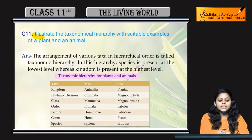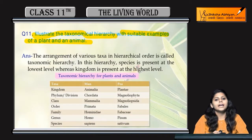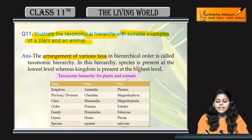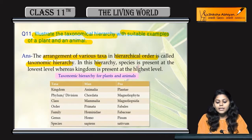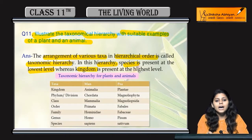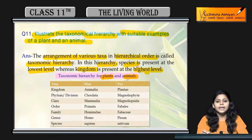The next question is: illustrate the taxonomical hierarchy with suitable examples of a plant and an animal. The arrangement of different taxa in a hierarchical order is called taxonomic hierarchy. In this hierarchy, species is at the lowest position and kingdom is at the highest level.